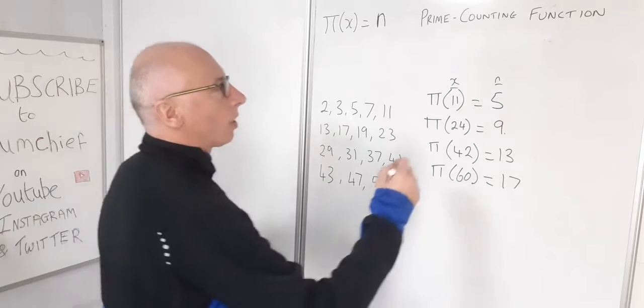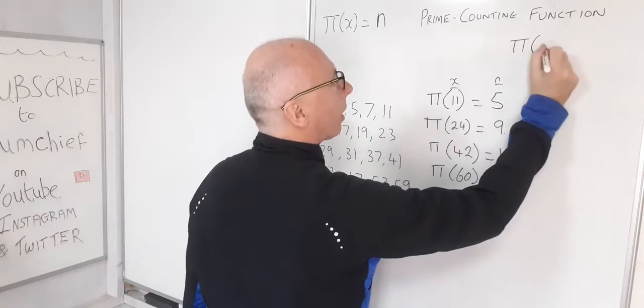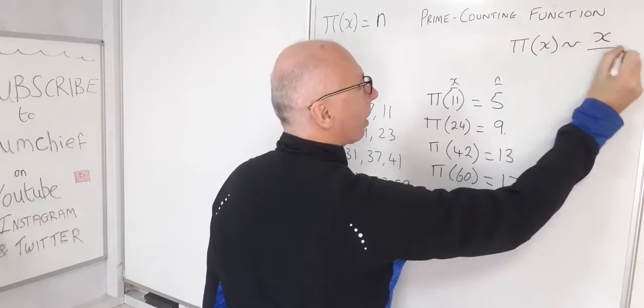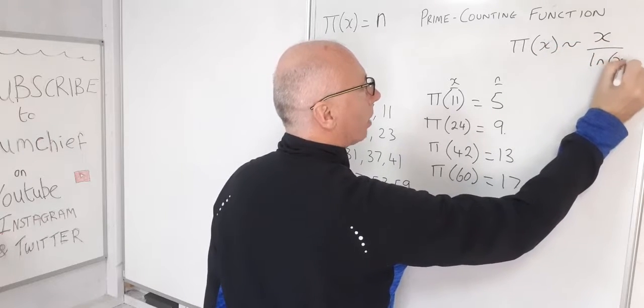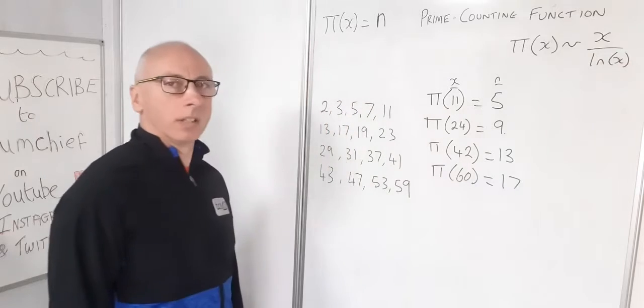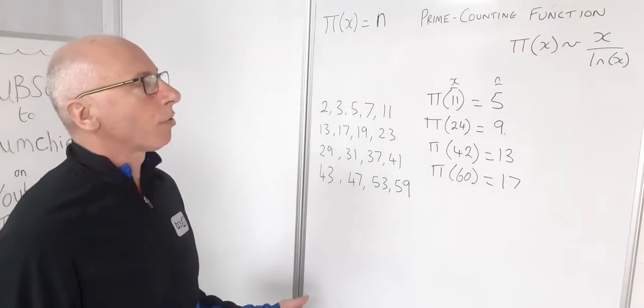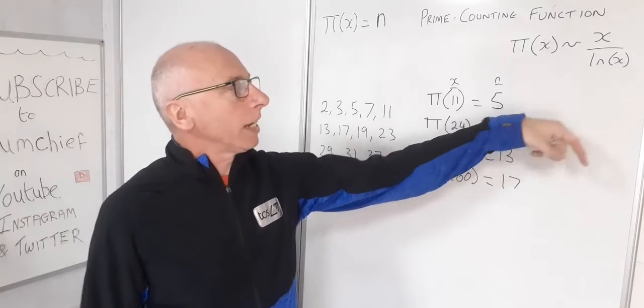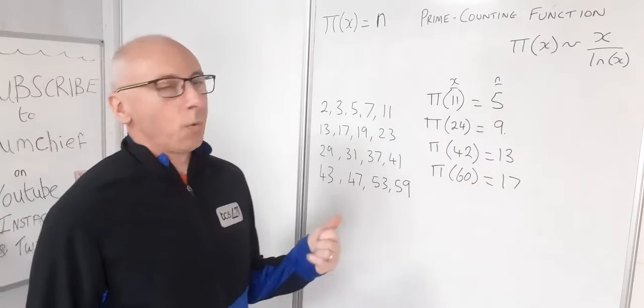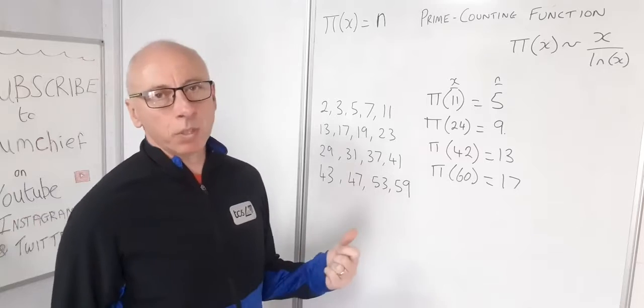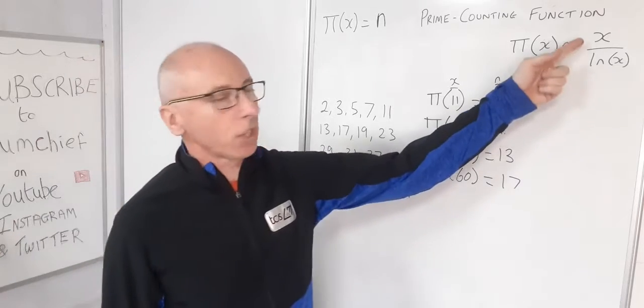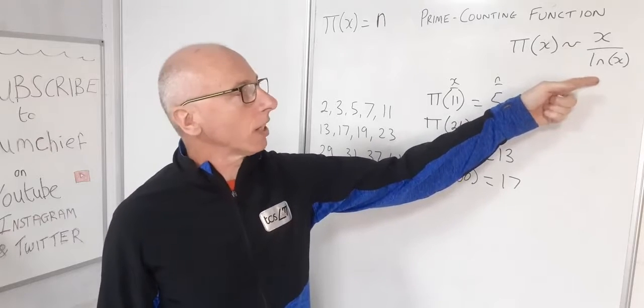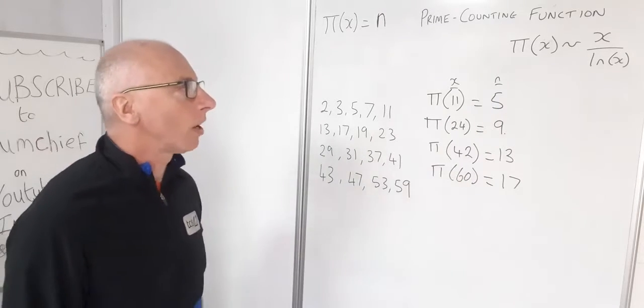The function reads like this: π(x) is approximately x over the natural log of x. Now we know the natural logarithm, as we're getting into high numbers, we're not going to get many whole numbers. Fractions are going to occur, decimals are going to occur, so it's not going to give you the exact number but hopefully some sort of reasonable guide.